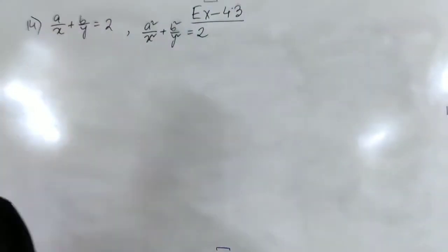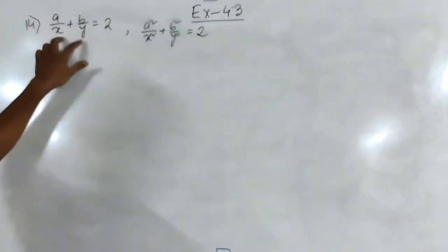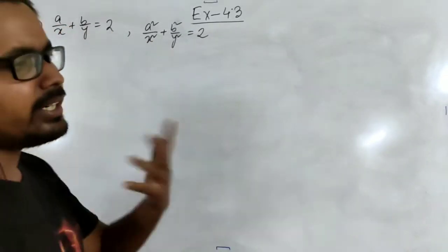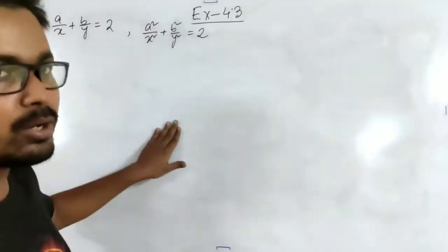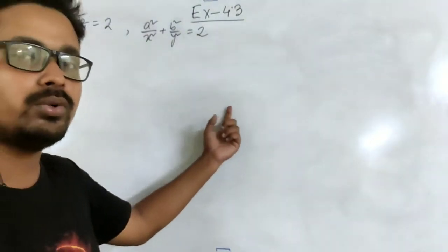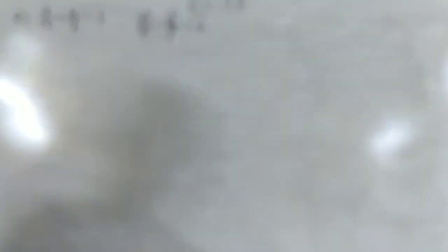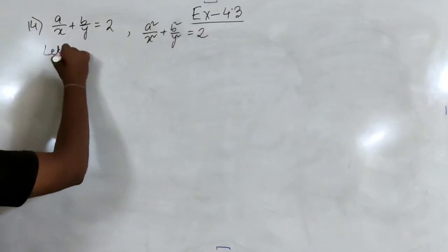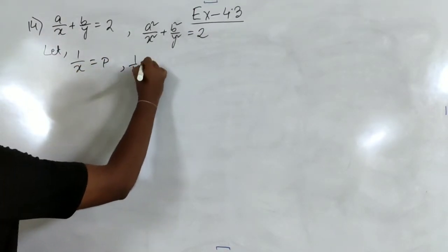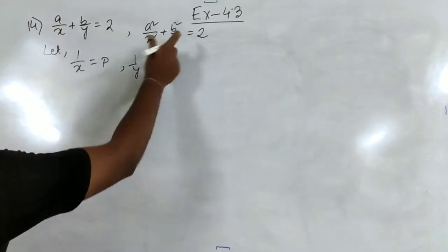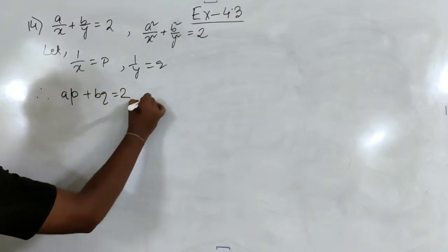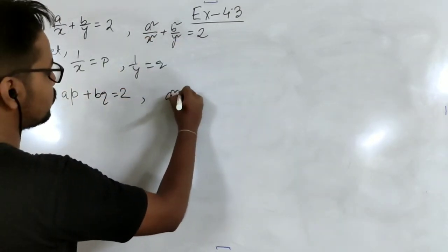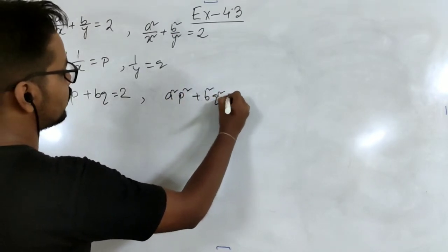Moving on to question number 14, another different kind where a and b are constants and x and y are variables appearing in the denominator. Similar to earlier problems with expressions like 2/x plus 3/y, we let 1/x equal to p and 1/y equal to q. Substituting into both equations gives: ap plus bq equal to 2, and a²p² plus b²q² equal to 1.